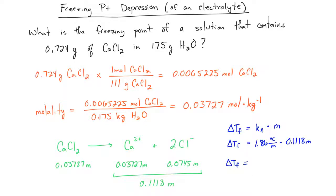So now we'll go ahead and calculate the freezing point depression. We're going to use the freezing point depression constant for water, since water is the solvent here. And we're going to plug in the corrected value, which is 0.1118 molal for the calcium chloride solution. Now at this point, we've calculated the freezing point depression.